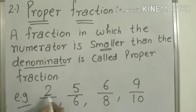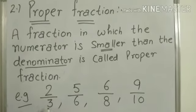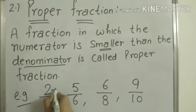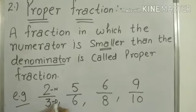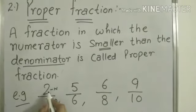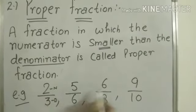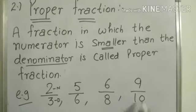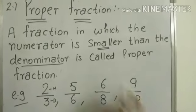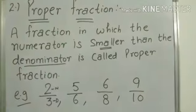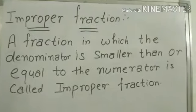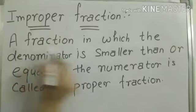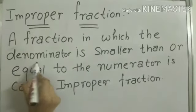Here, this is the numerator and this is the denominator. All the numerators are smaller than the denominator. These kinds of fractions are called proper fractions.